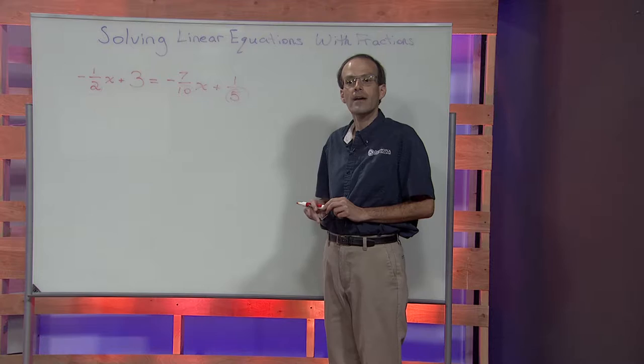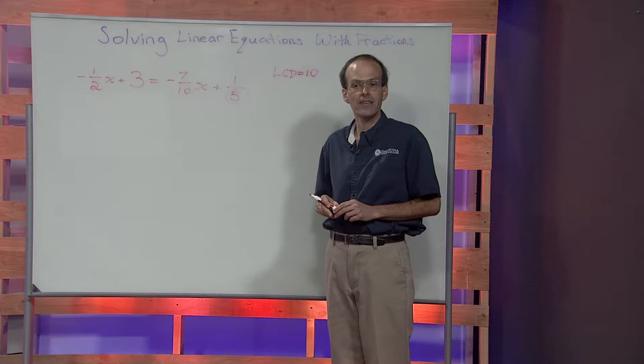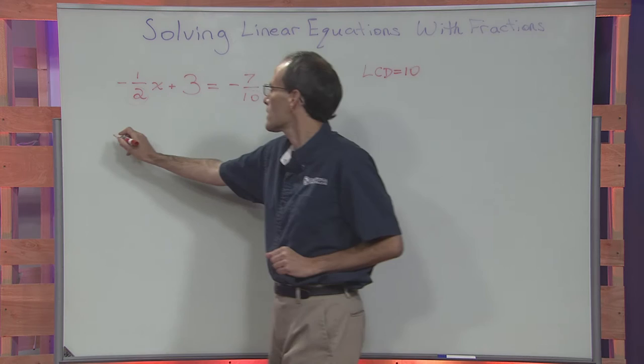The least common denominator of two, ten, and five is equal to ten. We'll take that least common denominator and multiply it on both sides of the equation to clear fractions.